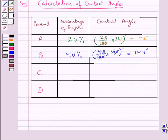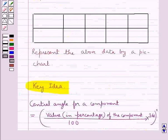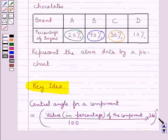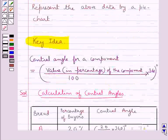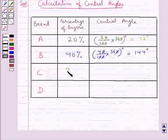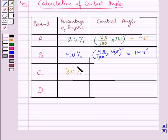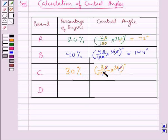For brand C, the percentage of buyers is 30%. Using the formula from the key idea, the central angle is given by 30 upon 100 into 360 degrees. Cancelling the zeros, 3 into 36 equals 108 degrees.